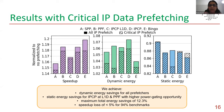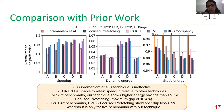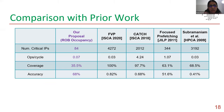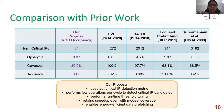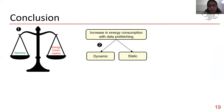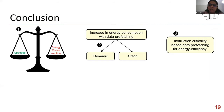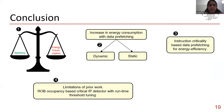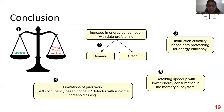We use ROB occupancy and stall frequency to detect critical IPs. Whenever an IP stalls at the head of the ROB, we record ROB occupancy in a Critical IP Training Table and compare against thresholds to mark it as critical. This incurs only 1.4KB storage overhead and fewer operations per cycle than prior work. We also perform prefetch-specific threshold relaxation: prefetch for all IPs in one window and critical IPs in another, checking performance difference to decide threshold adjustment. We achieve dynamic energy savings with all prefetchers and static energy savings with IPCP and PPF, with less than 5% speedup loss for 94% of benchmarks.